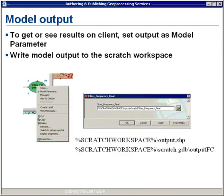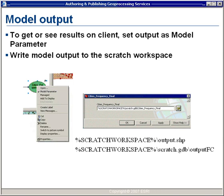The fourth item we need to look at is model output. For your clients to see results, we need to make sure we set output as a model parameter so it can be returned to the client. We also want to make sure that we write the model output somewhere ArcGIS Server has permission to write — typically the scratch workspace. We can set output as a model parameter by right-clicking on an output and choosing model parameter, and set the scratch workspace by using the percent scratch workspace inline variable to designate writing to a particular folder or a file-based geodatabase named scratch.